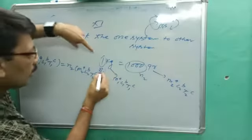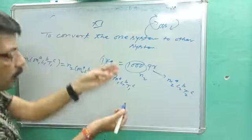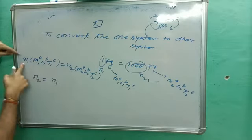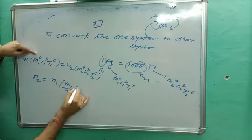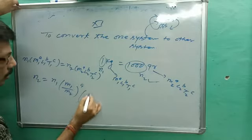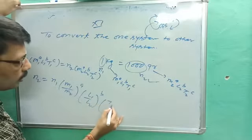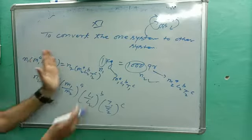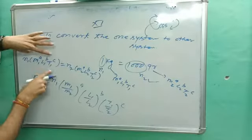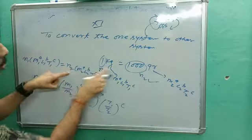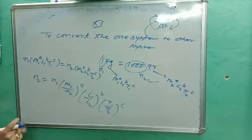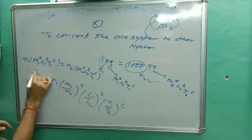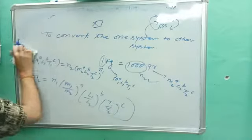Our aim is to find n2 when n1 is given. Solving the equation, n2 = n1 × (M1/M2)^a × (L1/L2)^b × (T1/T2)^c. This is the formula we are going to use for conversion. For instance, 1 kg equals 1000 grams confirms the formula works — n1 times one side equals n2 times the other.